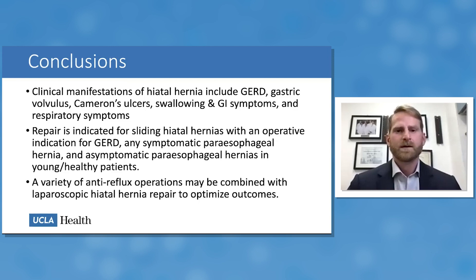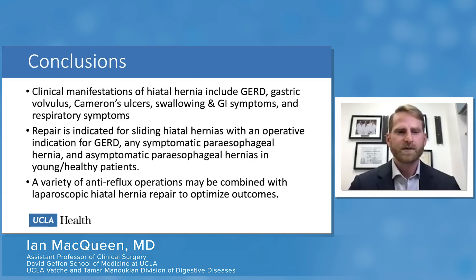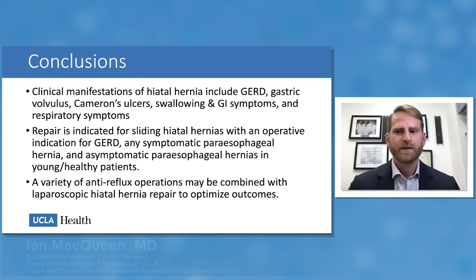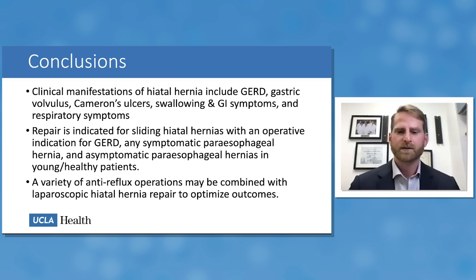In conclusion, the clinical manifestations of hiatal hernia include GERD, gastric volvulus, Cameron's ulcers, swallowing and GI symptoms, and respiratory symptoms — all of which must be carefully evaluated. Repair is indicated for sliding hiatal hernias with an operative indication for GERD, any symptomatic paraesophageal hernia, and asymptomatic paraesophageal hernias in young and healthy patients. A variety of anti-reflux operations can be combined with laparoscopic hiatal hernia repair to optimize outcomes.